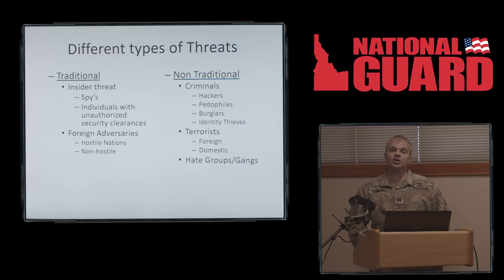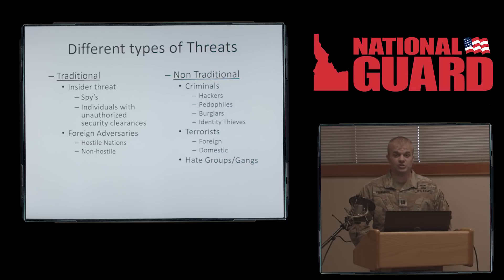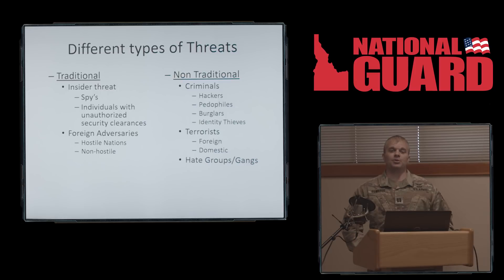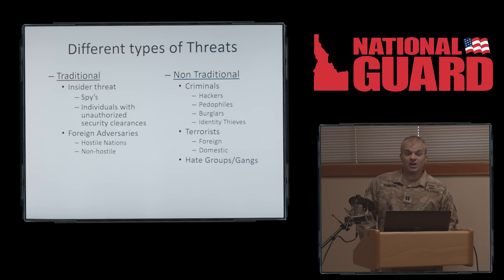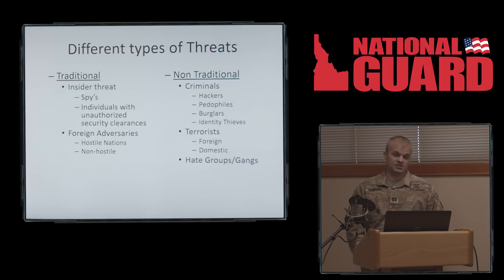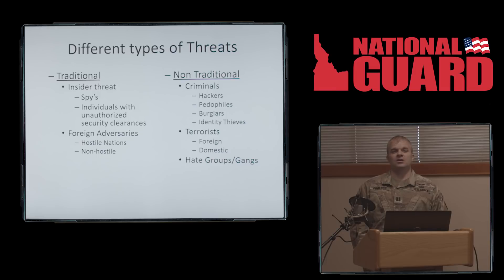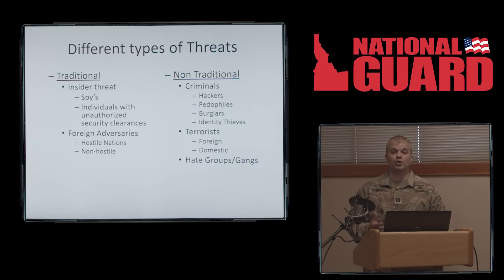Non-traditional threats are more of what we'll be focused on here in Idaho. The first category is criminals — hackers, pedophiles, burglars, identity thieves. These types of people are quite apt to try to get this information from you. Moving on, you have terrorists — both foreign and inside the United States. And certain ones we're seeing quite a bit of now are hate groups, gangs, and extremist groups. A lot of these individuals and groups are trying to get this information, so it is imperative that we safeguard it.